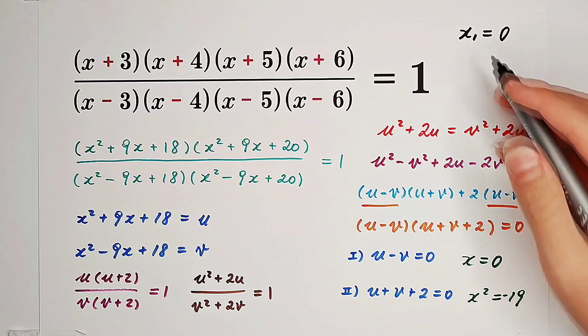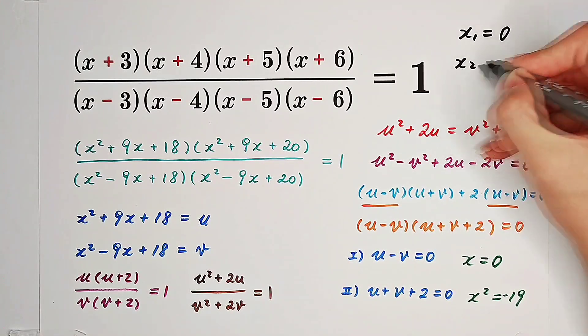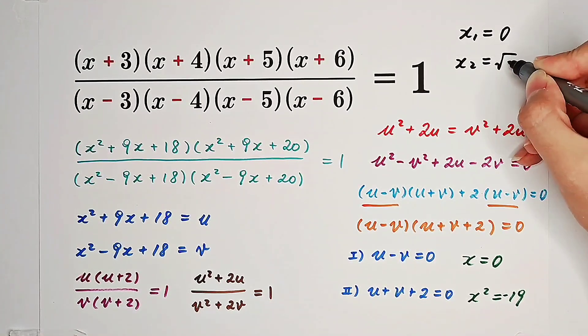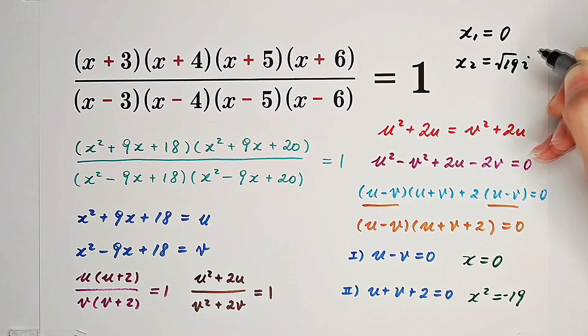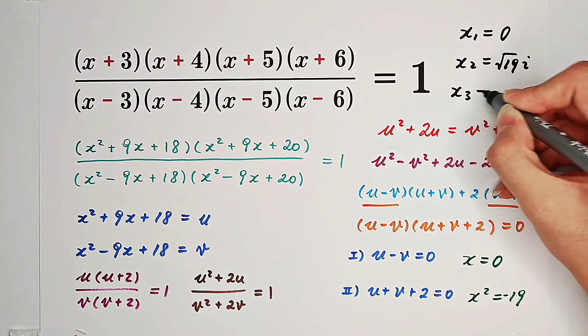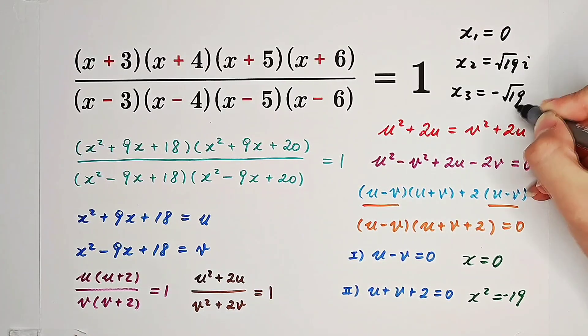So the three roots are going to be x1 equals 0, x2 equals square root of 19 times i, x3 is negative square root of 19 times i.